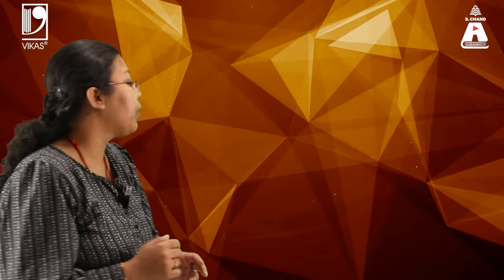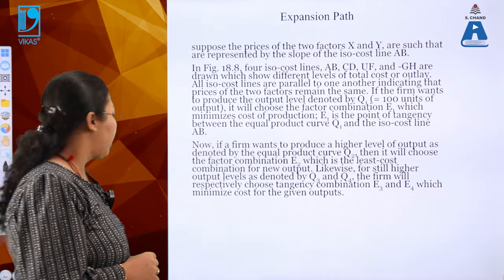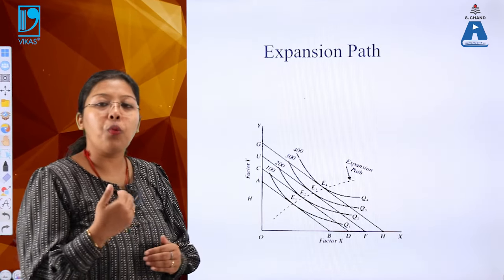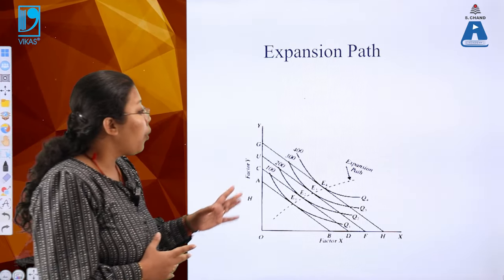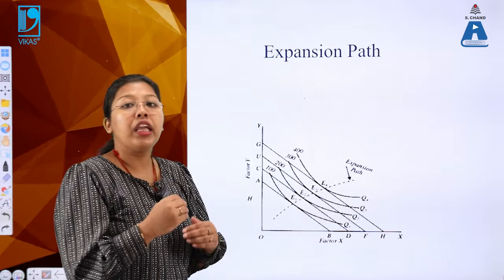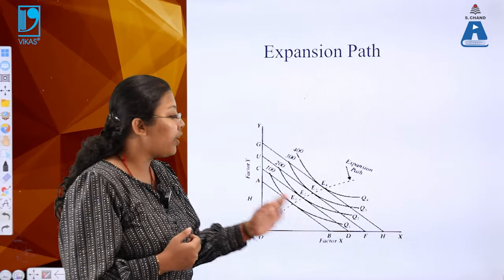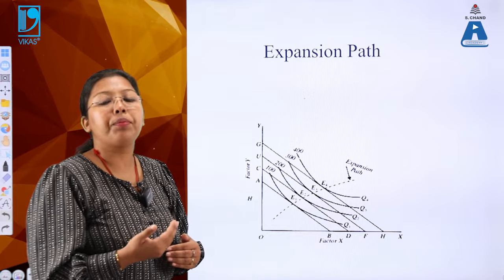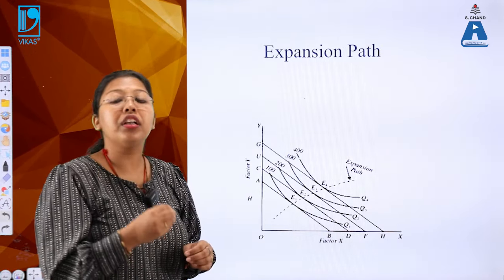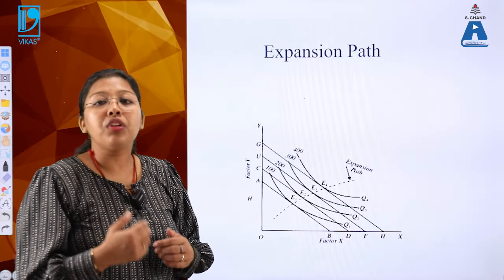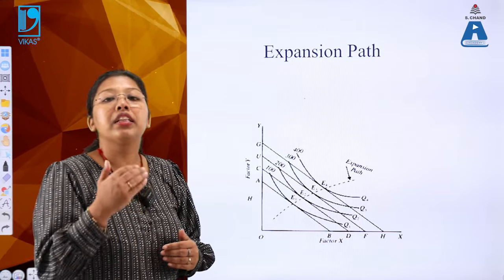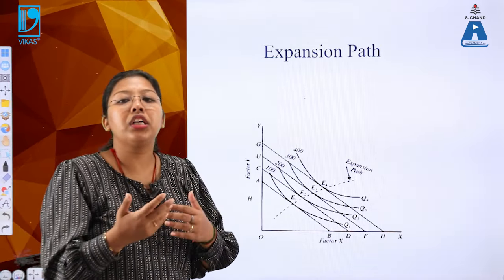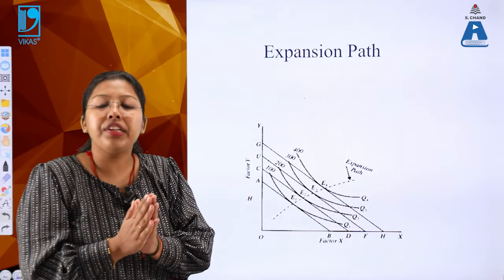Let's find out how it works. If you look at this graph, you'll find that certain quantities are produced by the producer using two factors in the economy - factor X and factor Y, as we studied in the last section. Using these factors, we produce certain things, shown graphically as the isoquant curve.